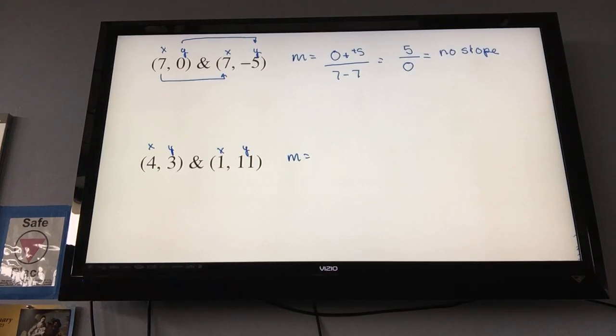All right, next question. M equals y, which is 3, minus the other y, which is 11, over x, which is 4, minus my other x, which is 1. 3 minus 11 is negative 8. 4 minus 1 is 3. So, my answer is negative 8 thirds.